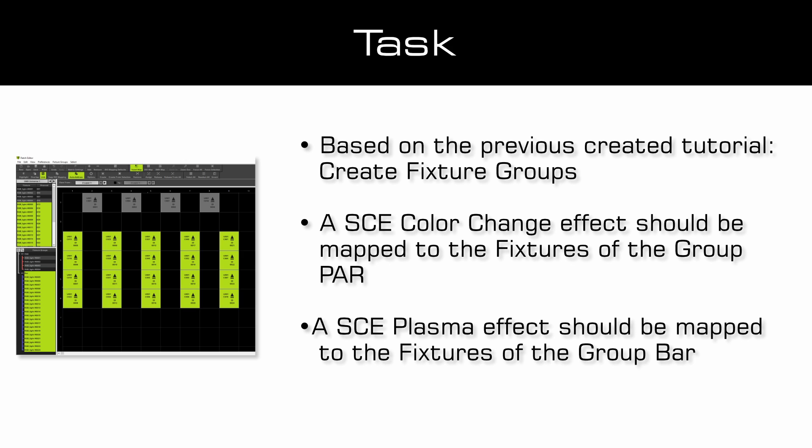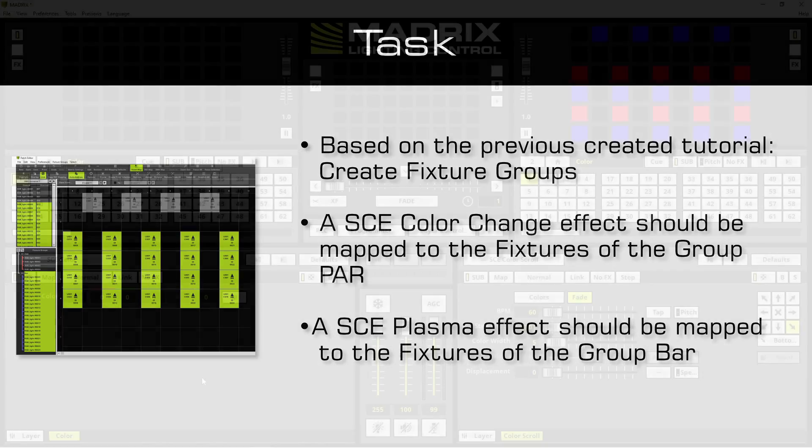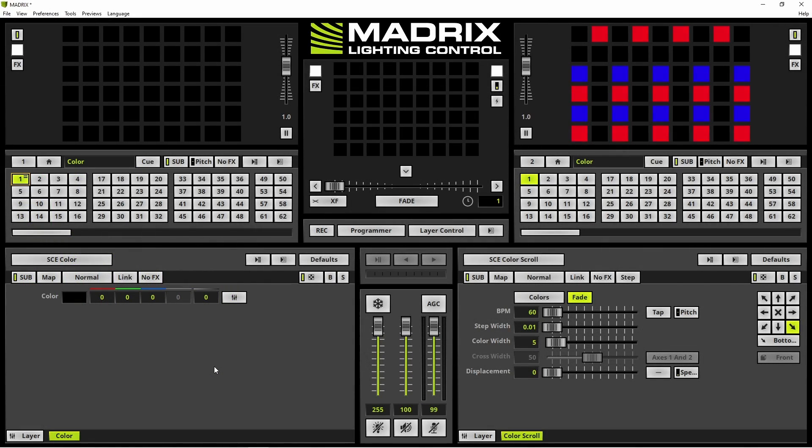As the task, we have to assign an SCE color change to the fixture group par and an SCE plasma effect to the fixture group bar. Now let us start.